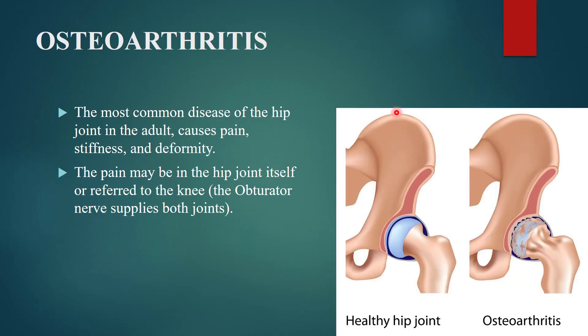Osteoarthritis — 'osteo' refers to bone, 'arthro' to joint, 'itis' means inflammation — is the most common disease of the hip joint in adults, causing pain, stiffness, and deformity. The pain may occur in the hip joint itself or be referred to the knee joint, because the obturator nerve supplies both the hip joint and the knee joint.